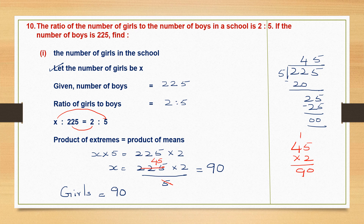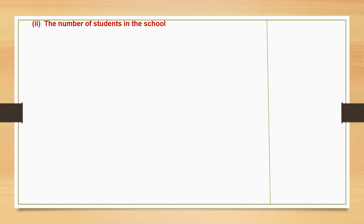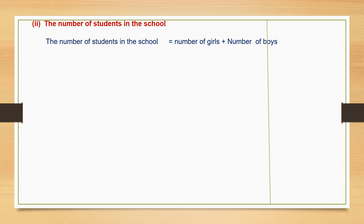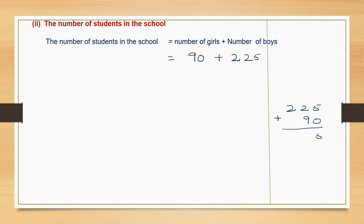We know number of girls is 90 and number of boys is 225. Now let's answer the second part: find the number of students in the school. We add up the number of girls plus the number of boys: 225 plus 90. 5 plus 0 is 5, 2 plus 9 is 11 carry 1, 2 plus 1 is 3. So the number of students in the school is 315.